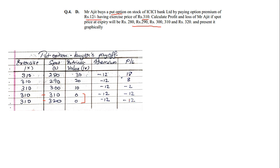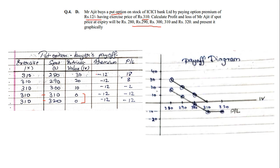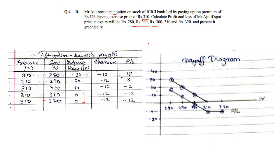With that the put option buyer's payoff table is done. We now plot it in the graphical way. On the x-axis: 280, 290, 300, 310, 320. P&L and intrinsic value are on the y-axis. Starting with intrinsic value: 30, 20, 10, 0, 0. Then profit and loss: 18, 8, negative 2, negative 12, negative 12.